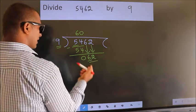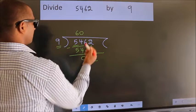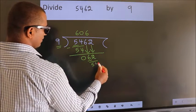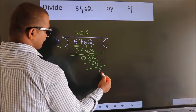So 62. A number close to 62 in 9 table is 9, 6, 54. Now we subtract. We get 8.